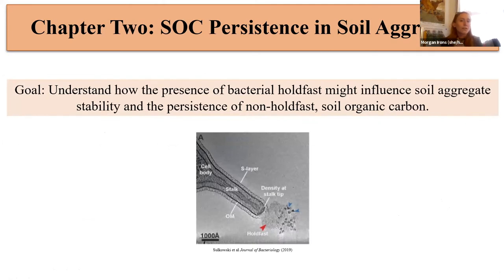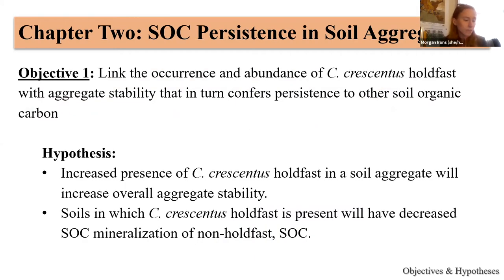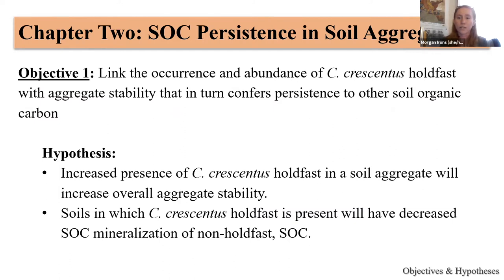Moving into chapter two, the goal is to understand how the presence of bacterial holdfast might influence aggregate stability and the persistence of non-holdfast soil organic carbon. The objective is to link the occurrence and abundance of holdfast with aggregate stability and see if this actually confers persistence to other soil organic carbon. My hypothesis is that increased presence of Caulobacter crescentis holdfast in the aggregate will increase overall aggregate stability, and that soils in which holdfast is present will have decreased soil organic carbon mineralization of non-holdfast soil organic carbon.